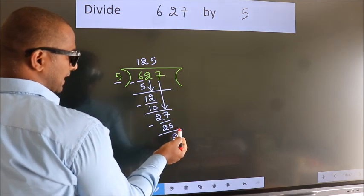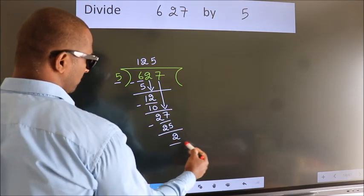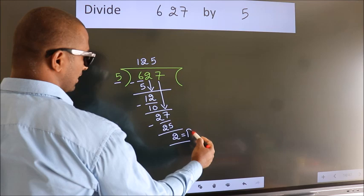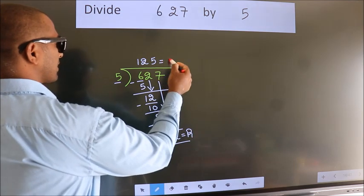No more numbers to bring down. So we stop here. This is our remainder. This is our quotient.